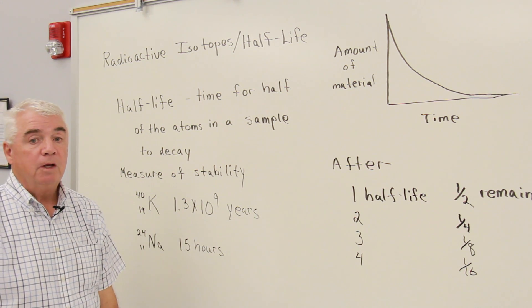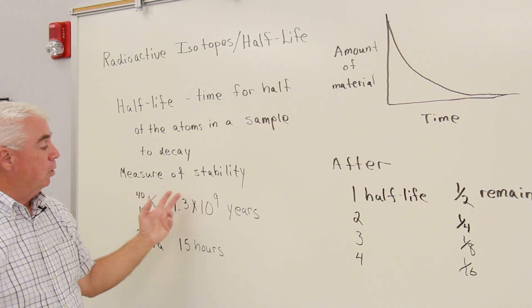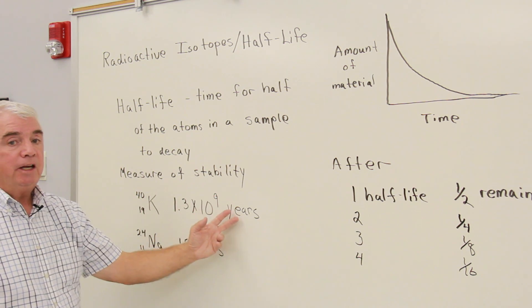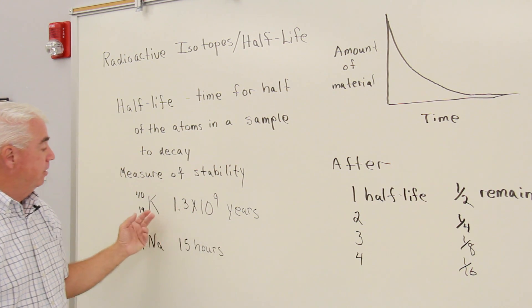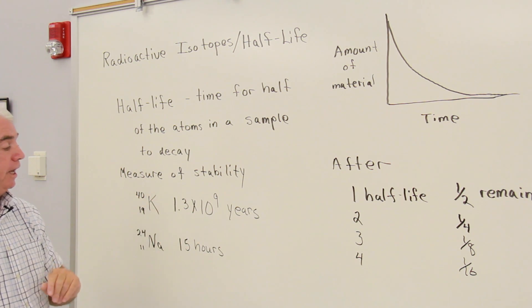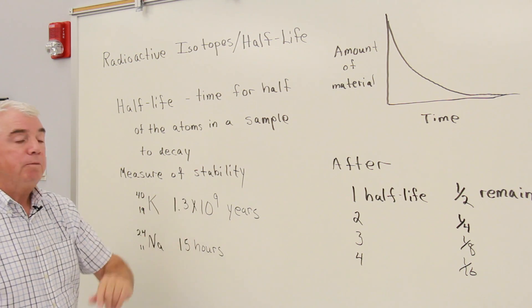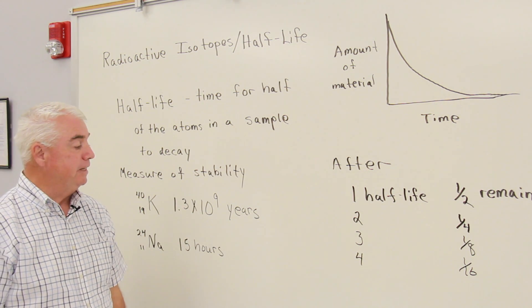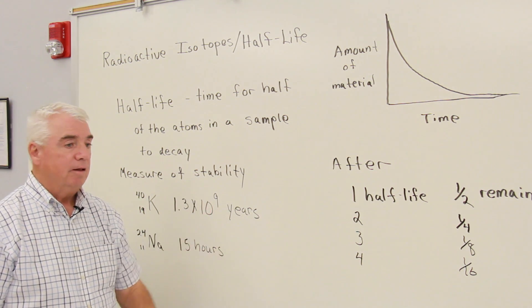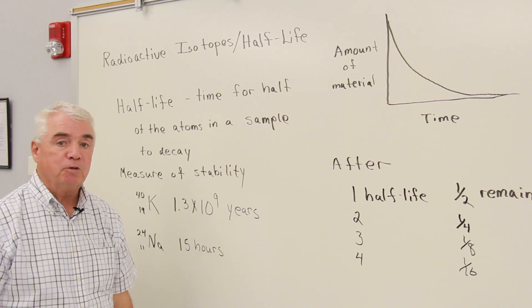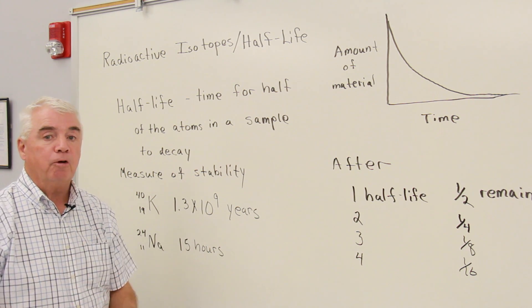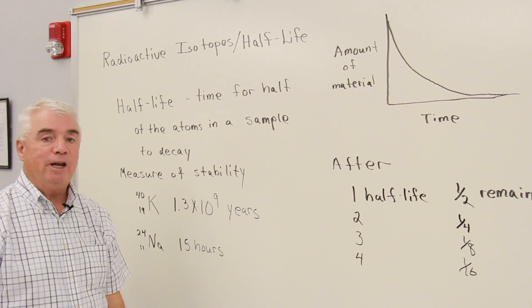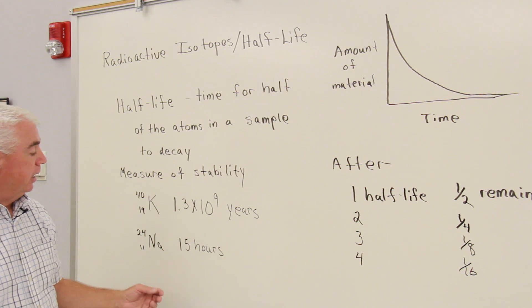Some isotopes are so stable that they have an exceedingly long half-life. For example, potassium-40 has a half-life of 1.3 times 10 to the ninth years. That means that maybe every thousand years or so an atom disintegrates and gives off some radiation, breaks down into something else.